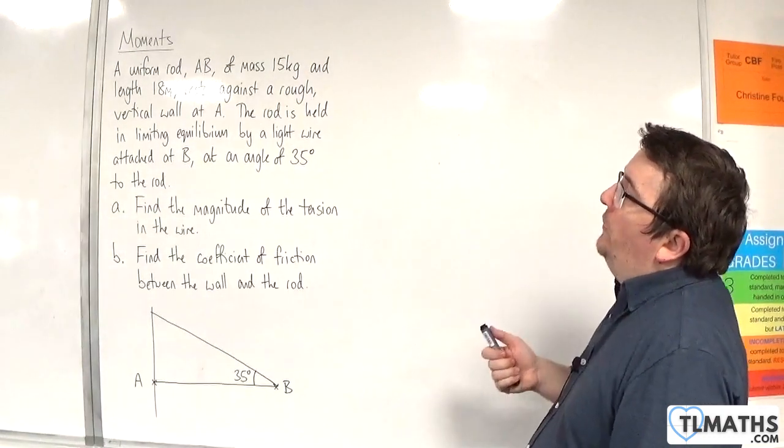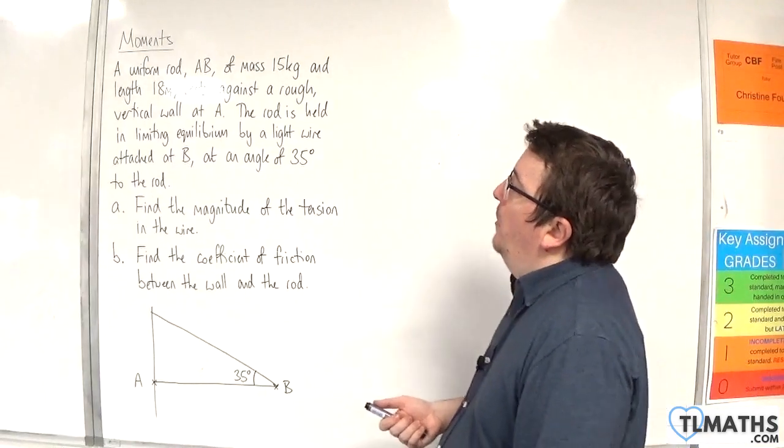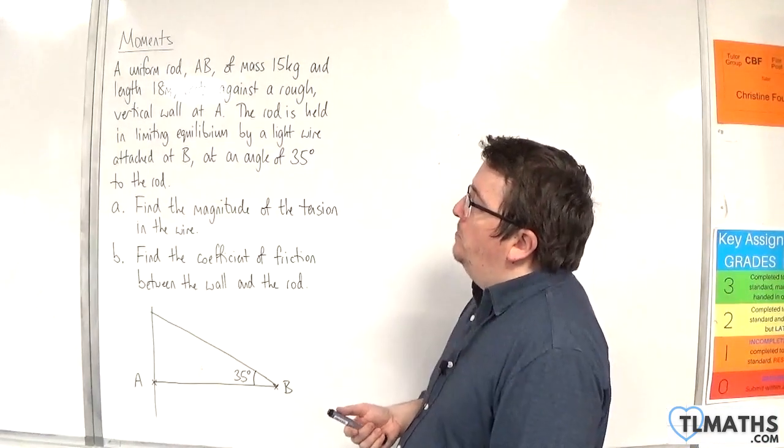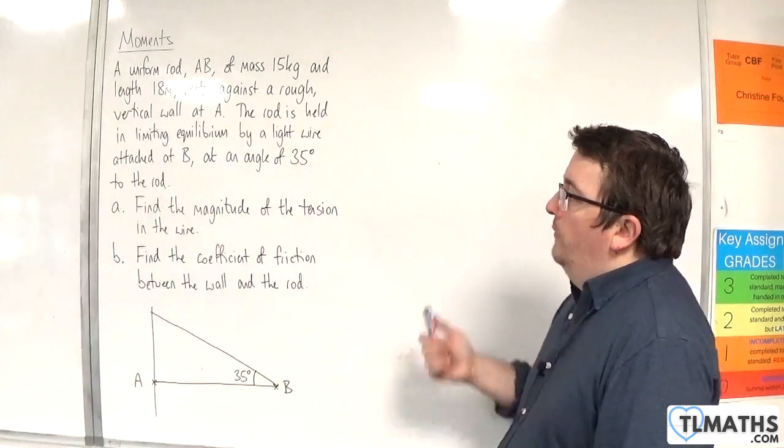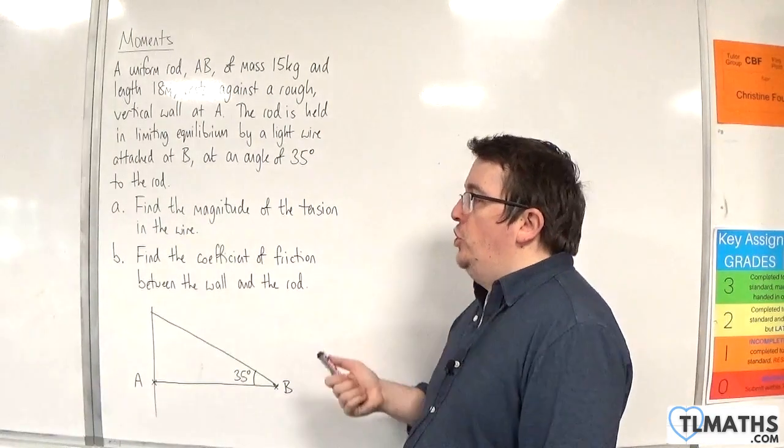The rod is held in limiting equilibrium by a light wire attached at B at an angle of 35 degrees to the rod. Find the magnitude of the tension in the wire.